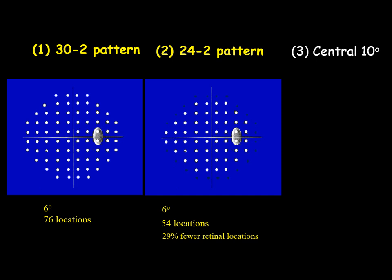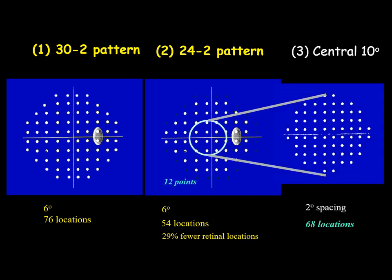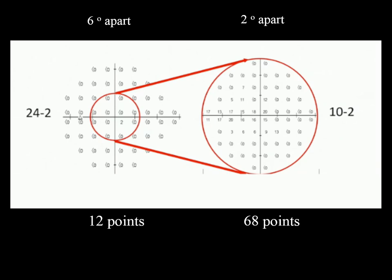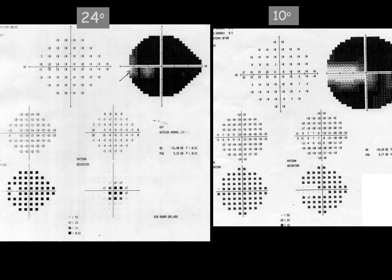For the central 10 degrees, if we order the central 10-degree test, the distance between test locations is only 2 degrees and we test 68 points. This is especially important if you want to check for changes in the central area. In the 24 or 30 degree test, the central 10 degrees are only covered by 12 points, but if we order the 10-degree test separately, we test 68 points — very important for detecting changes in the central 10 degrees.